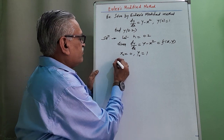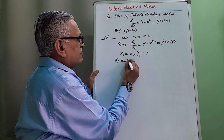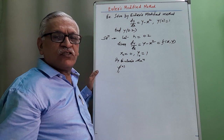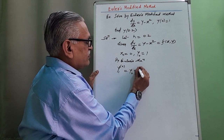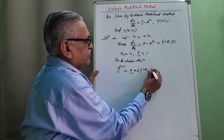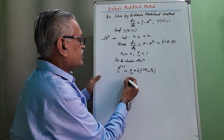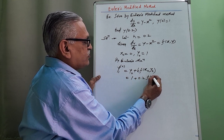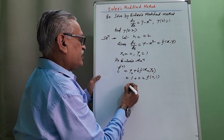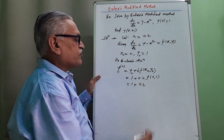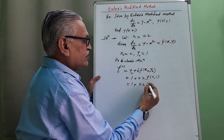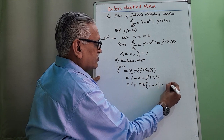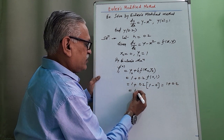We start with the initial approximation by Euler's method. y₁⁽⁰⁾ = y₀ + h · f(x₀, y₀). Substituting: y₀ = 1, h = 0.2, and f(x₀, y₀) = y − x² = 1 − 0² = 1. So y₁⁽⁰⁾ = 1 + 0.2 × 1 = 1.2. That is the initial approximation for y₁.